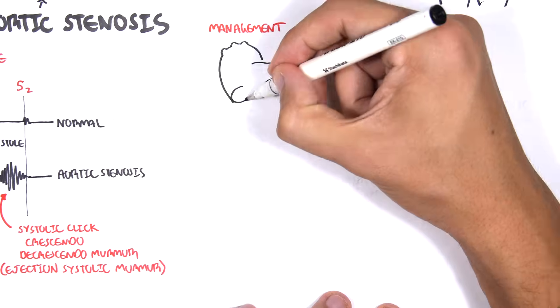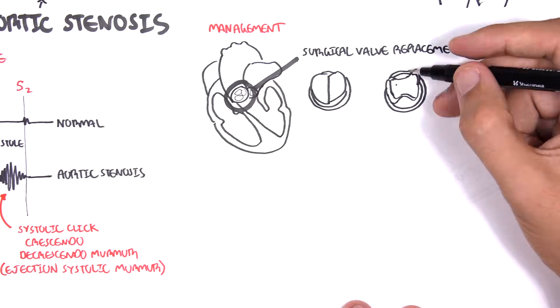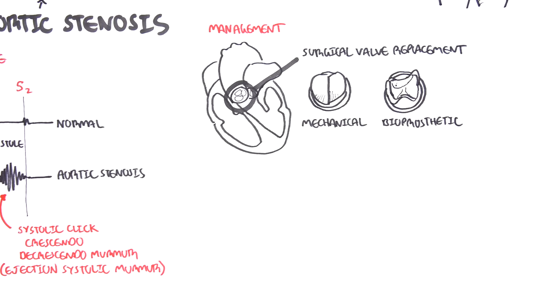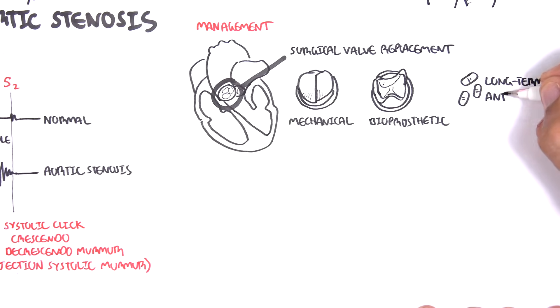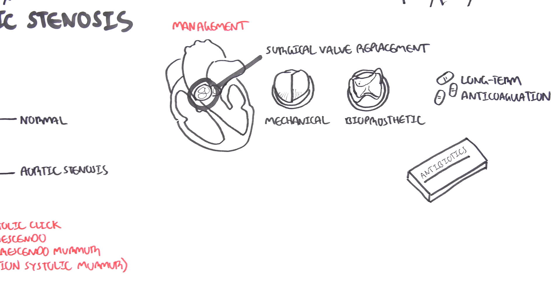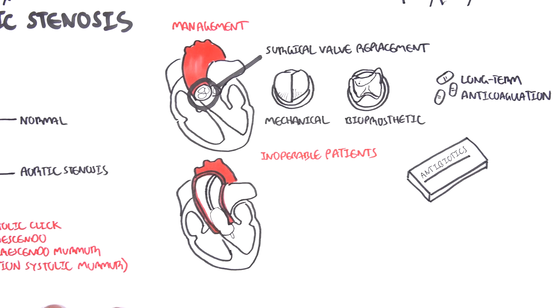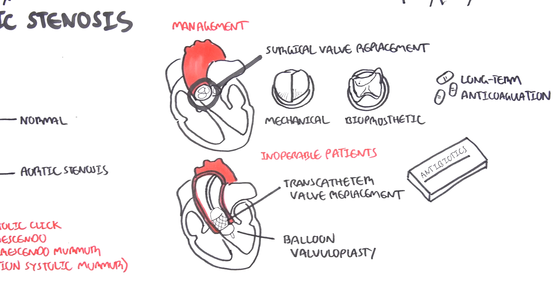Management of aortic stenosis includes surgical valve replacement or repair. A valve replacement can be mechanical or bioprosthetic. There are weaknesses and strengths between the two. Mechanical valve replacement is often used for younger people because it lasts longer. Use of short long-term anticoagulants and antibiotics may be necessary following surgery for those who are susceptible to infections and complications. For patients unable to undergo a valve replacement, there is balloon valvuloplasty where the valve's foramen is dilated, and transcatheter valve replacement can also be performed following a balloon valvuloplasty.